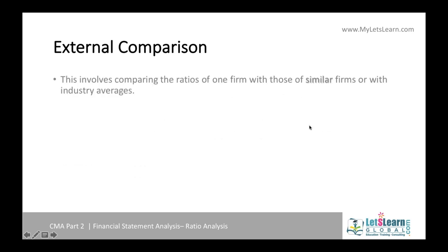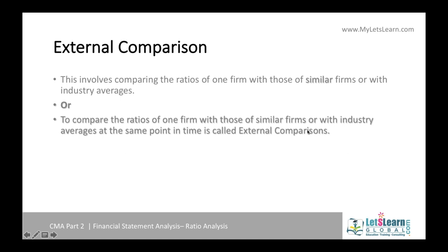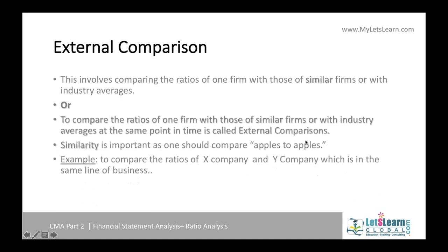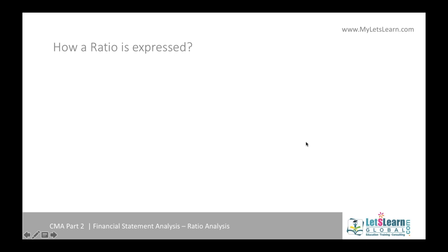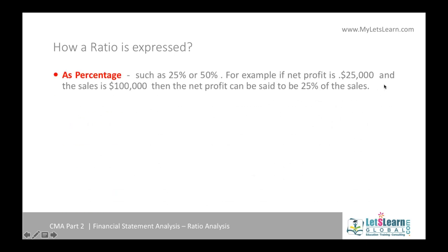Ratios are expressed in different formats. A ratio can be expressed as a percentage — for example, 25% — meaning my profit is 25% of sales, so profit is expressed in terms of sales.